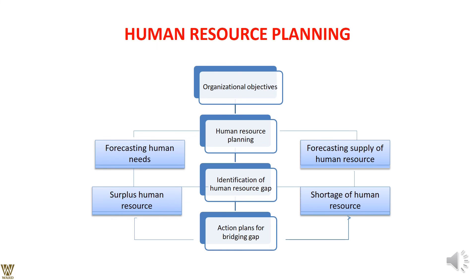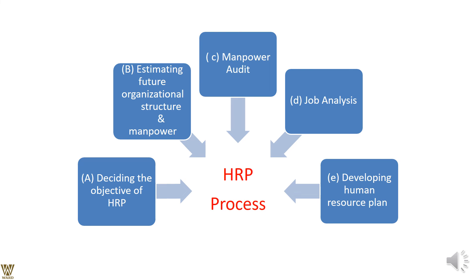In HR planning, we start with organizational objectives — based on those, we plan how many people are required. This is done through forecasting human resource demand and the supply available. If there is a huge supply of resources that are not adequately skilled, it is redundant. We need to understand gaps: the surplus or shortage of human resources in terms of quantities, numbers, skills, and technical know-how, and how to bridge those gaps.